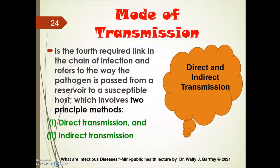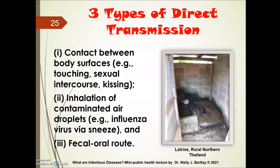The mode of transmission is the fourth required link in the chain of infection. It refers to the way the pathogen is passed from a reservoir to a susceptible host, which includes two principle methods: direct and indirect transmission. Three types of direct transmission include contact between body surfaces such as touching, shaking hands, sexual intercourse, or kissing; inhalation of contaminated air droplets such as influenza or COVID-19 when someone sneezes; and the fecal-oral route, which is especially common in developing nations.